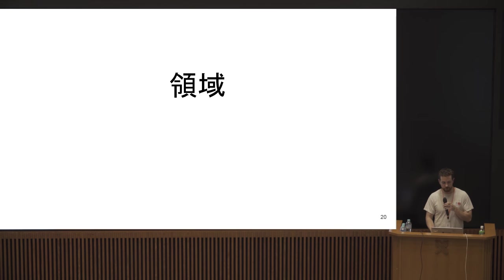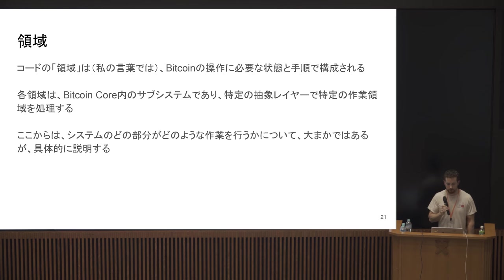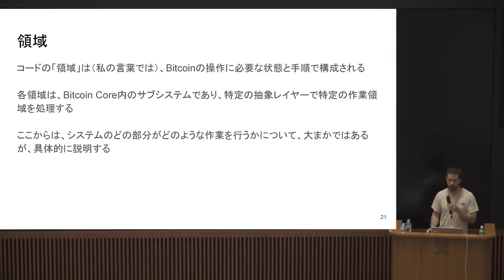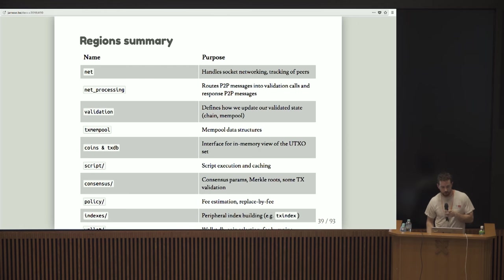Let's talk about something I call regions. Regions of code are basically little modules of state and procedures that each do a certain thing for Bitcoin — it's not an official term, just what I call them. Each region is a subsystem that handles a certain domain of tasks. In summary: the net region handles socket networking and tracking of peers. Net processing routes peer-to-peer messages it receives from net into validation calls and other response peer-to-peer messages.